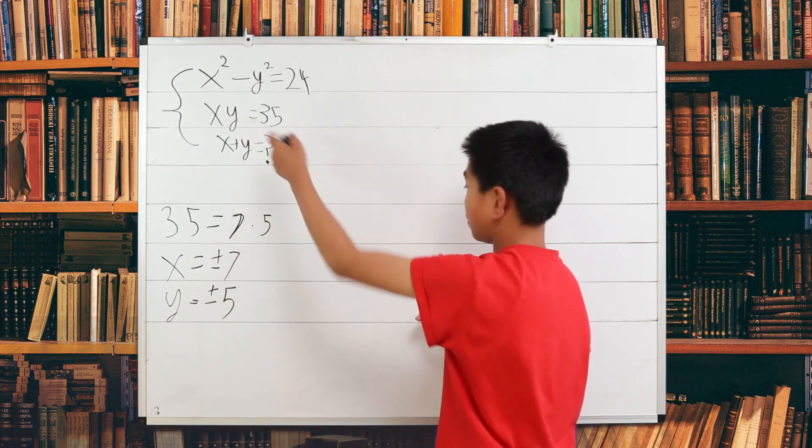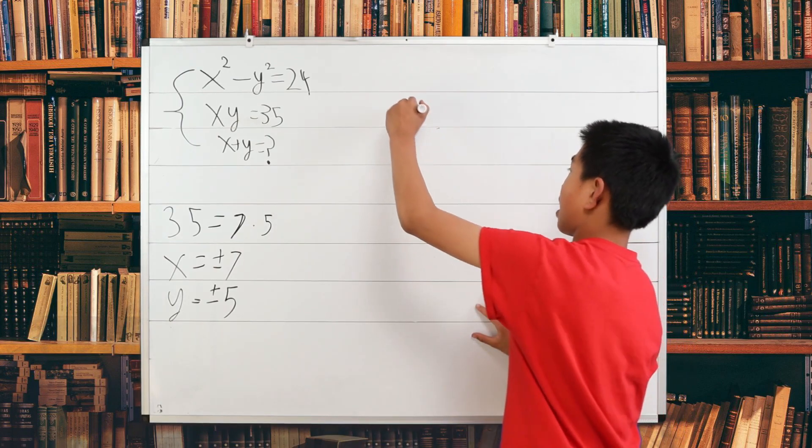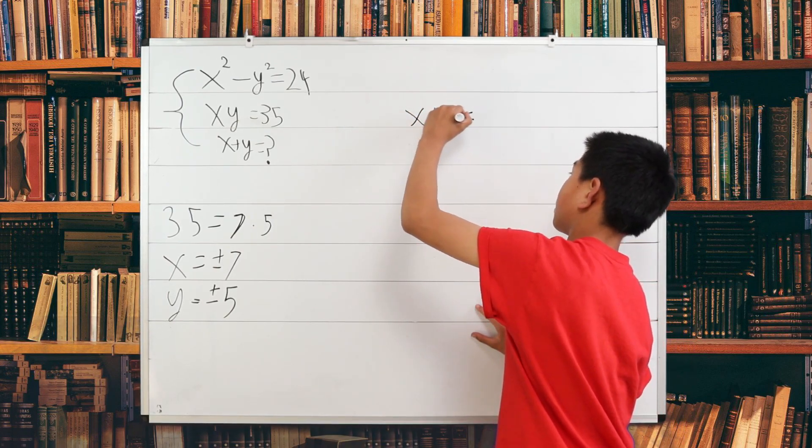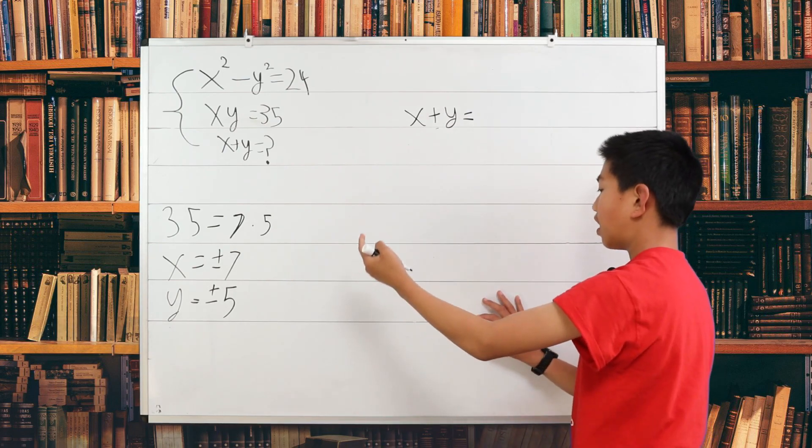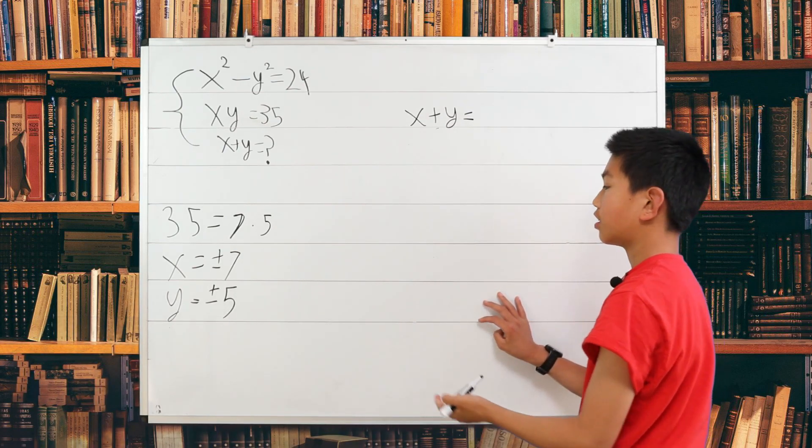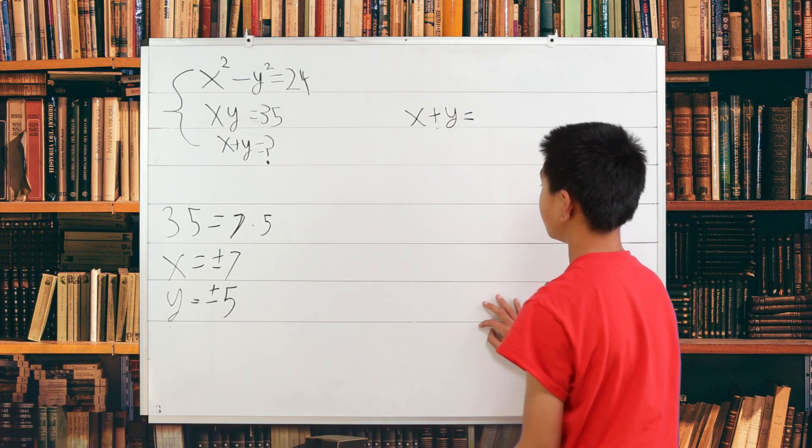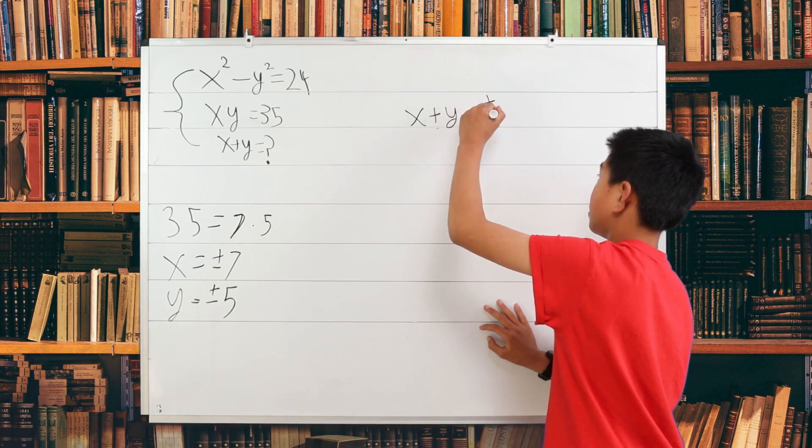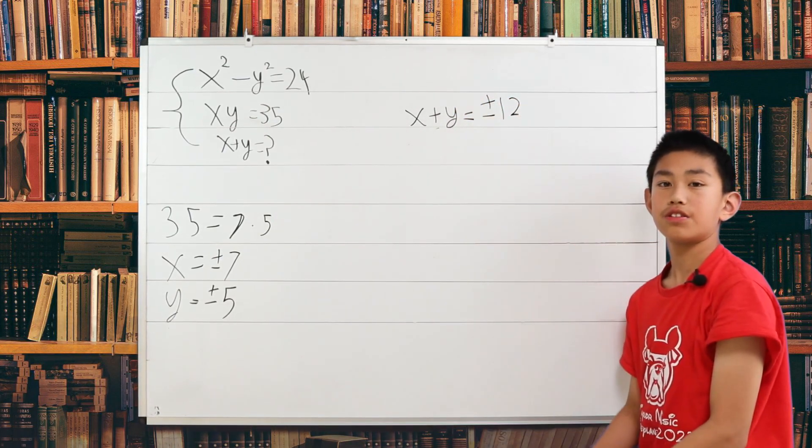So now we have our x and y values here. We need to find what x plus y is. So x plus y is equal to positive or negative 12. And that is our answer.